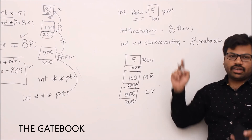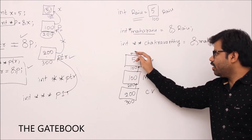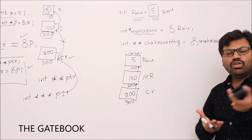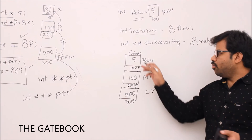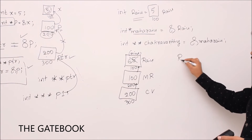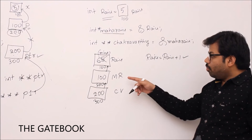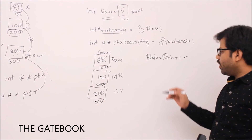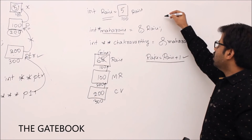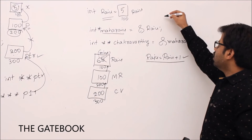Now what is the purpose of this double pointer, single pointer, and variable? Raju wants to change his value — for example, he wants to buy a car, which means changing his value to 6. There are three ways. First: raju equal to raju plus one. Second: Maharaju wants to change Raju's value — we use star MR. We know star MR equals raju, meaning content of MR is 100, so star 100 — value at 100 — is 5, which is Raju's value. So from now on, instead of raju I can use star MR.